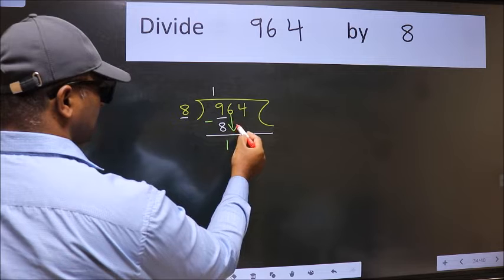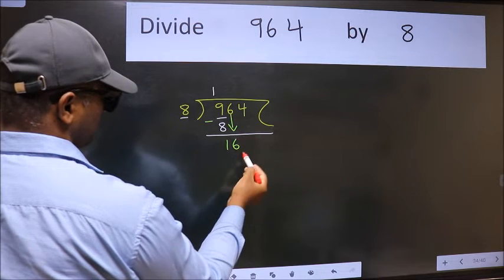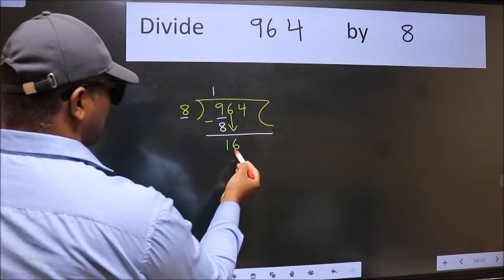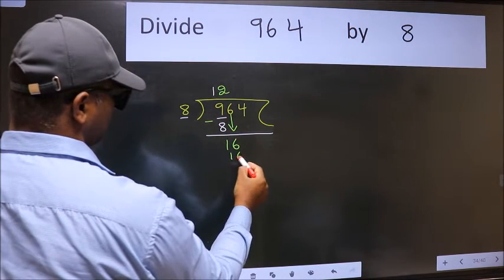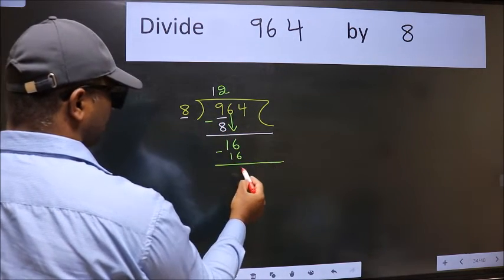After this, bring down the beside number. So 6 down. 16. When do we get 16 in 8 table? 8 times 2 is 16. Now we subtract. We get 0.